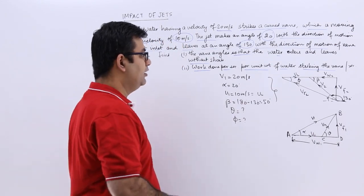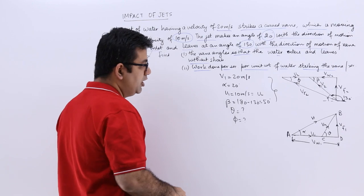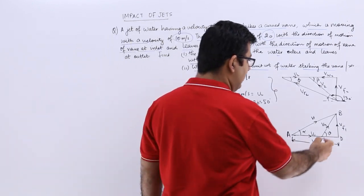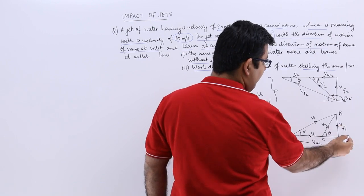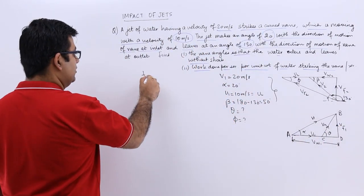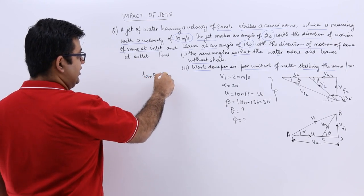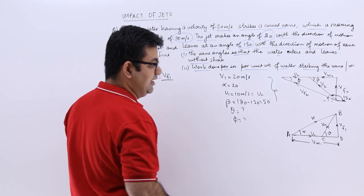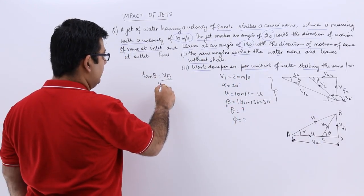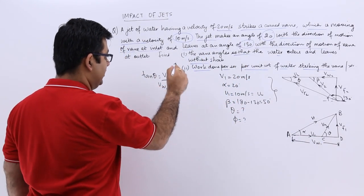Let's start with the inlet velocity triangle. What is the value of tan theta? The value of tan theta in triangle BCD is VF1 by CD. So tan theta is VF1 upon CD. CD is what? VW1 minus U1.